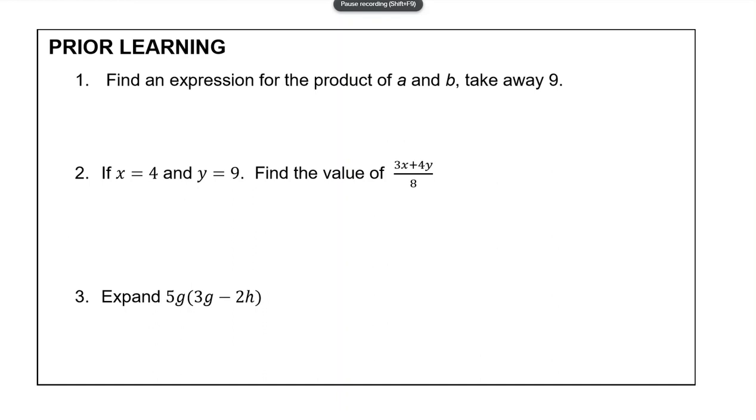Question one, this is from our very first lesson in algebra. We want to write an expression for the product—product means that we're timesing things—of A and B. So we have A and B times together. We don't like to write times signs, we just put them next to each other: AB, that's the product of A and B. Then it says to take away 9, so minus 9.